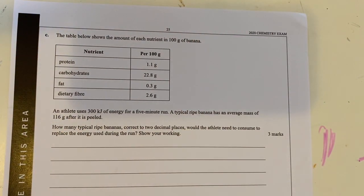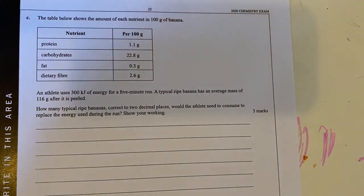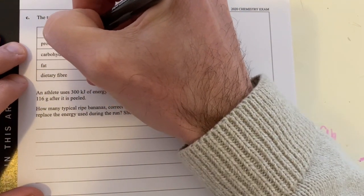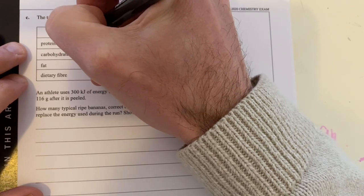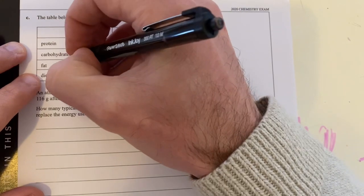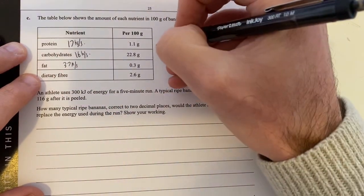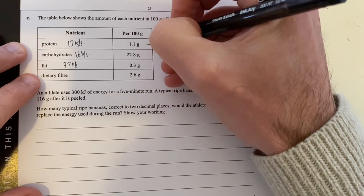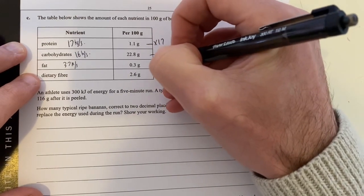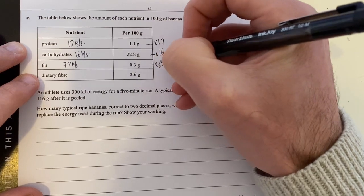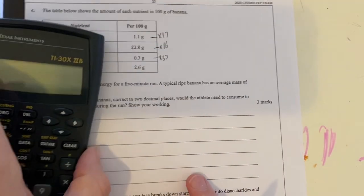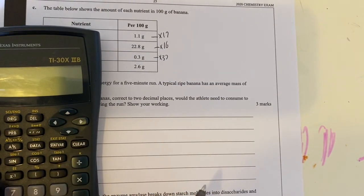In my data booklet, I've got the energy content of these different things. Protein is 17 kilojoules per gram, carbohydrates are 16 kilojoules per gram, and fat is 37 kilojoules per gram. I'll take the protein and times it by 17, carbohydrates times by 16, fat times by 37. Dietary fiber will not be digested, so I don't have to worry about that.